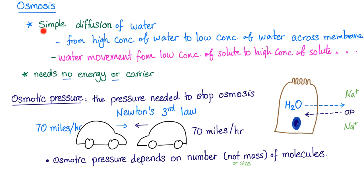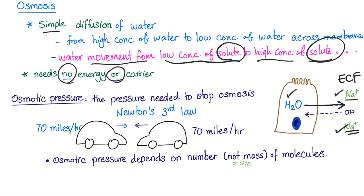So, what is osmosis? Osmosis is simple diffusion of water. Simple diffusion of water from high concentration of water to low concentration of water across the membrane. Or you can do this. Water movement from low concentration of solute to high concentration of solute. It's the same exact thing. It needs no energy. It needs no carrier, because it's a simple diffusion.